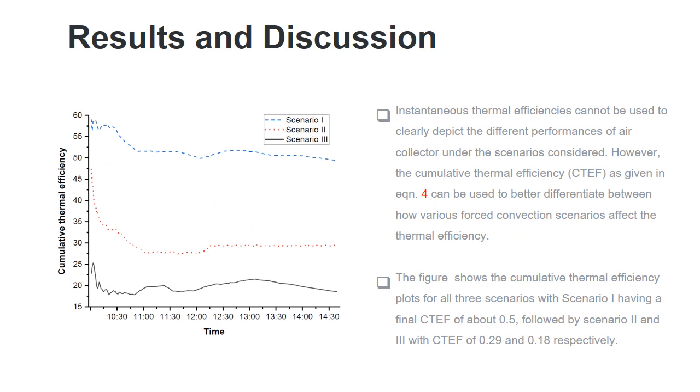Instantaneous thermal efficiency cannot be used to clearly depict the different performances of air collectors under the scenarios considered. However, the cumulative efficiency as given in equation 4 can be used to better differentiate between how the various forced convection scenarios affected thermal efficiency. The figure shows the cumulative thermal efficiency plots of the three scenarios.